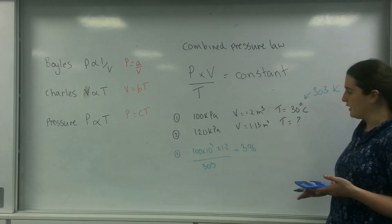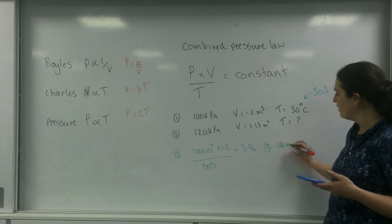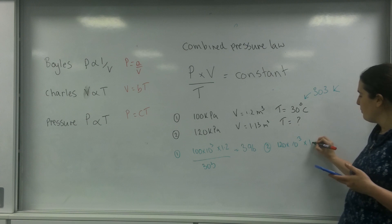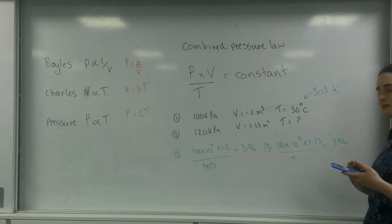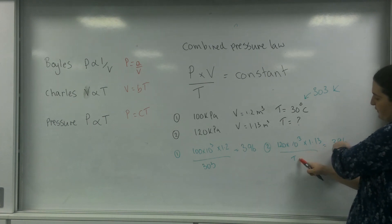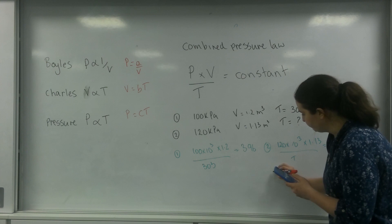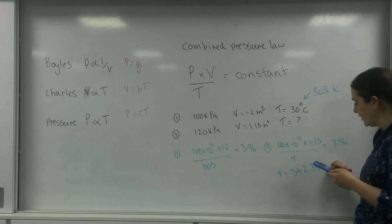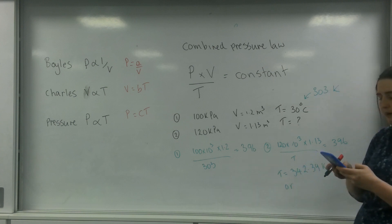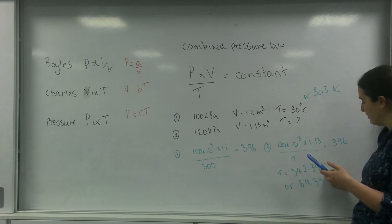This constant is the same after. So I know that 120 times 10 to the 3 times by 1.13 over my temperature also equals 396. So if I want the temperature, I'm just going to flip those around. So I've got 120 times 10 to the 3 times by 1.13 divided by that. My new temperature is 342.39 Kelvin, or if I take away 273, I end up with 69.39 degrees C.